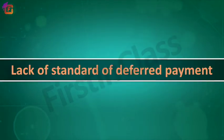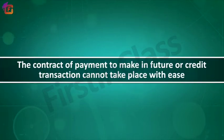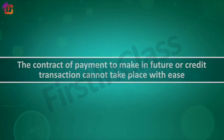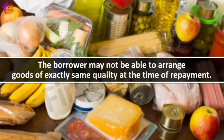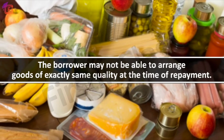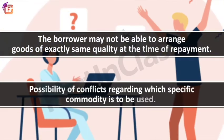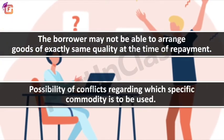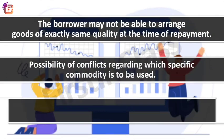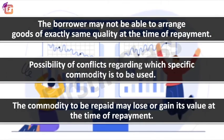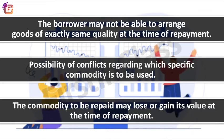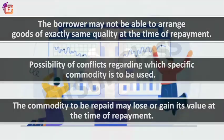Secondly, there is lack of standard of deferred payment, meaning contracts of payment to be made in the future or credit transactions cannot take place with ease. This is because the borrower may not be able to arrange goods of exactly the same quality at the time of repayment, there may be conflicts regarding which specific commodity is to be used, and the commodity to be paid may lose or gain its value at the time of repayment.